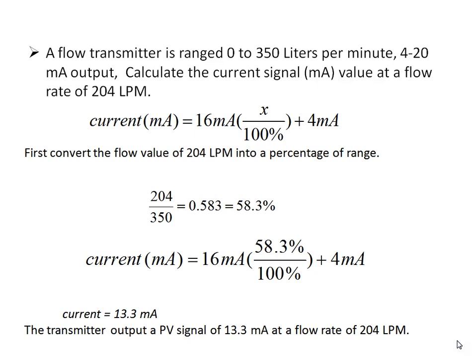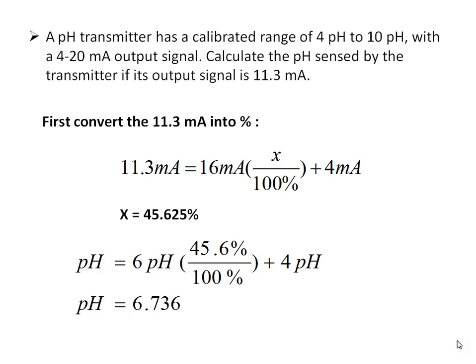Here, X is the process variable. So the transmitter outputs a process variable signal of 13.3 mA at a flow rate of 204 lpm. In another example, a pH transmitter has a calibrated range of 4 to 10 pH with a 4 to 20 mA output signal. Calculate the pH sensed by the transmitter if the output signal is 13.3 mA. This is the reverse of the earlier example — here we know the output current and need to find the pH. Converting 11.3 mA into a percentage gives approximately 45.625%, corresponding to 11.3 mA. Placing this in the equation, we get a pH of approximately 6.736.